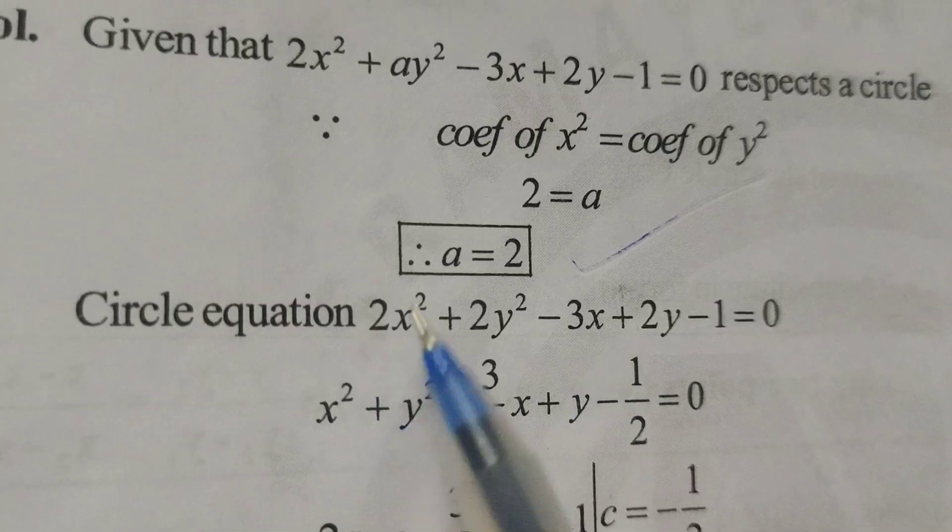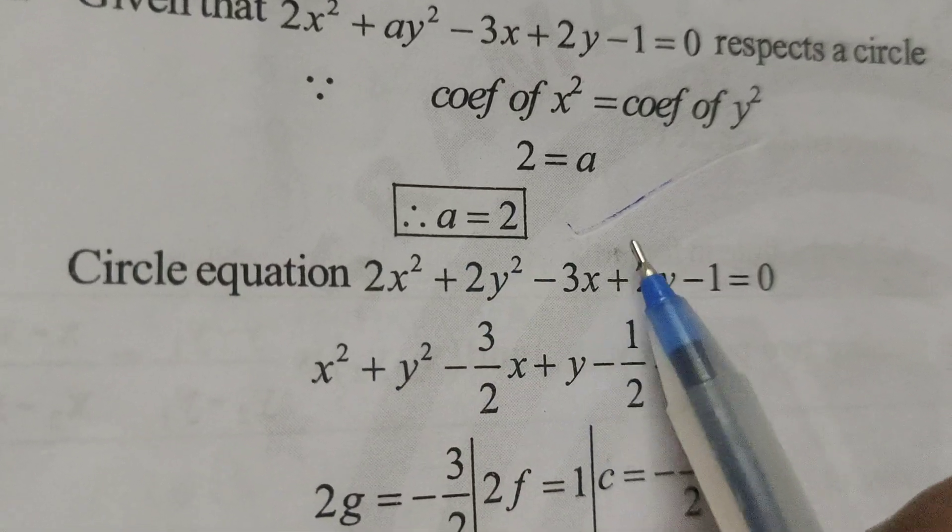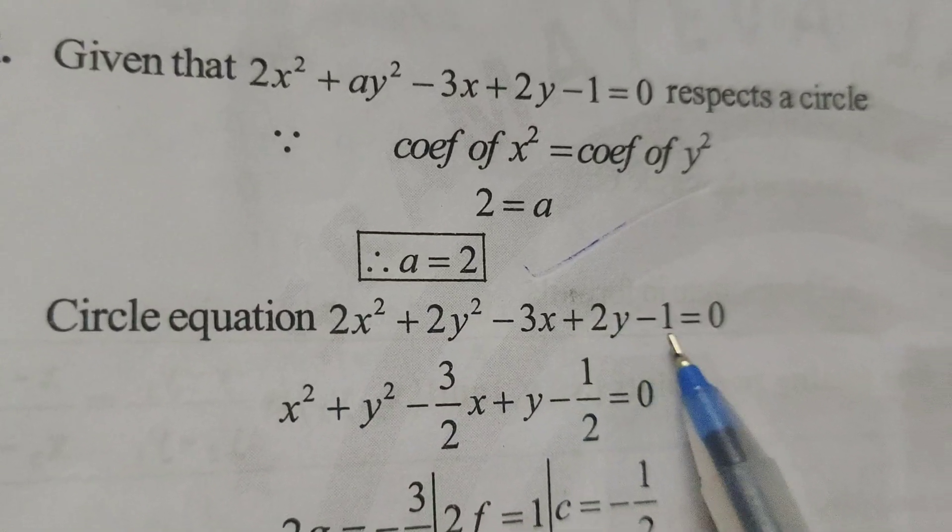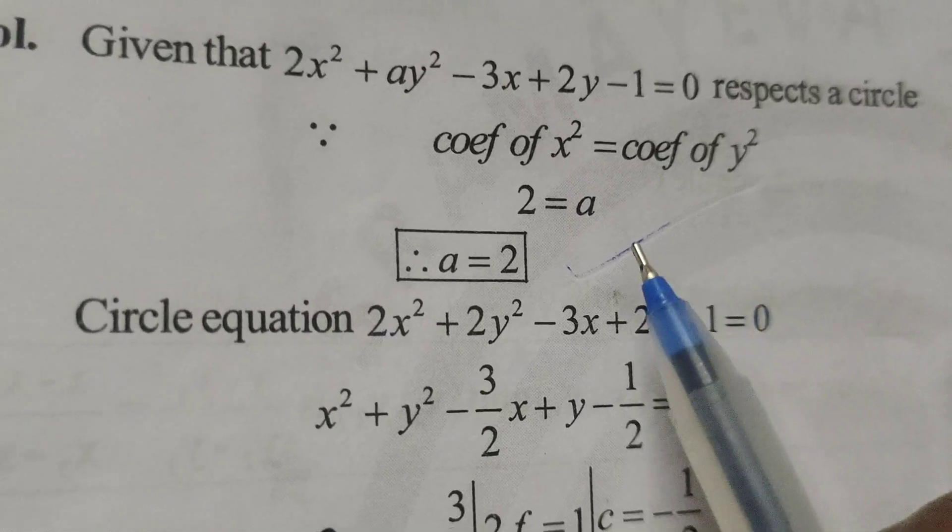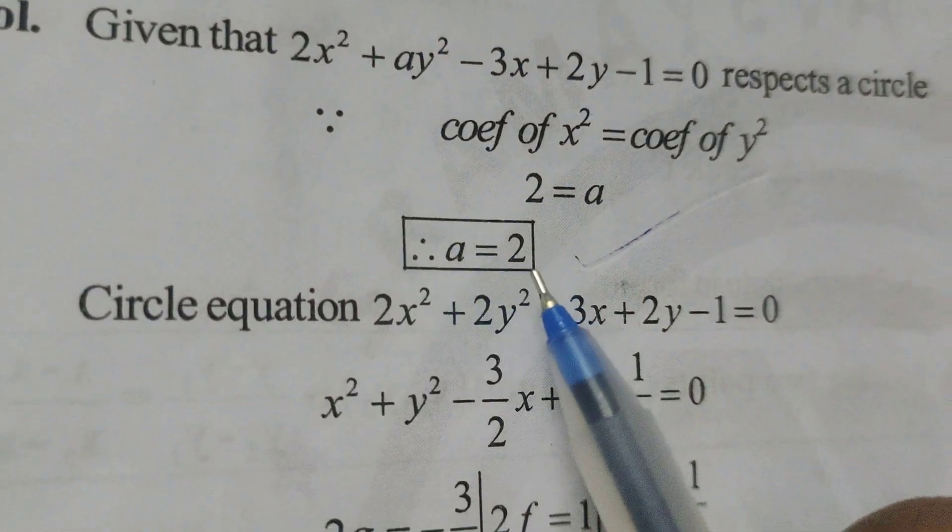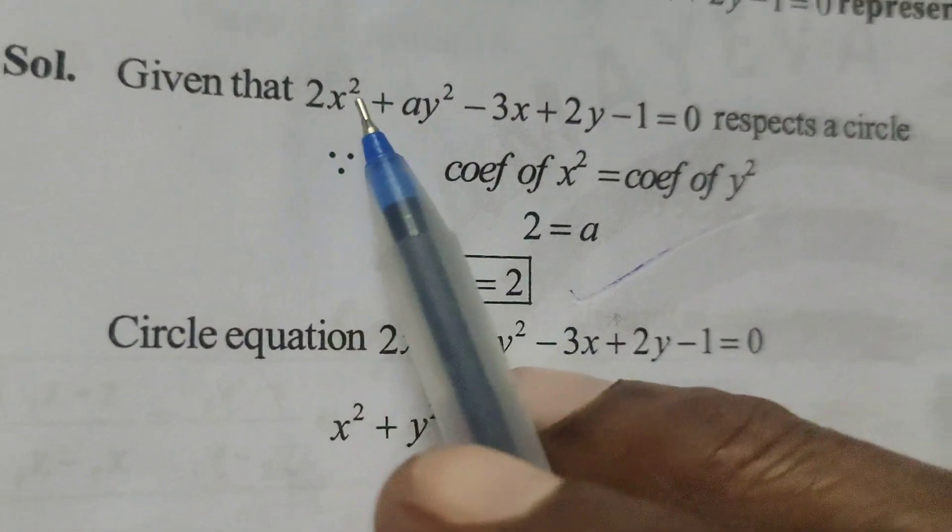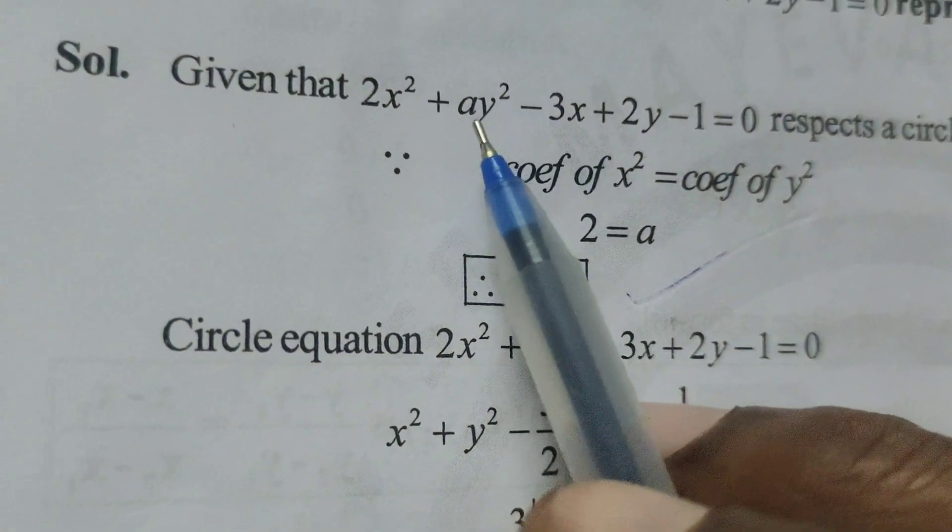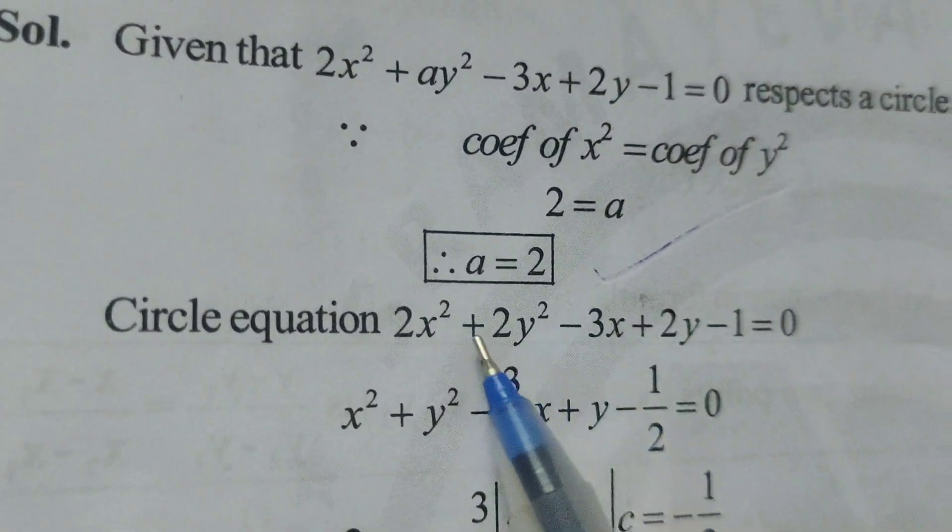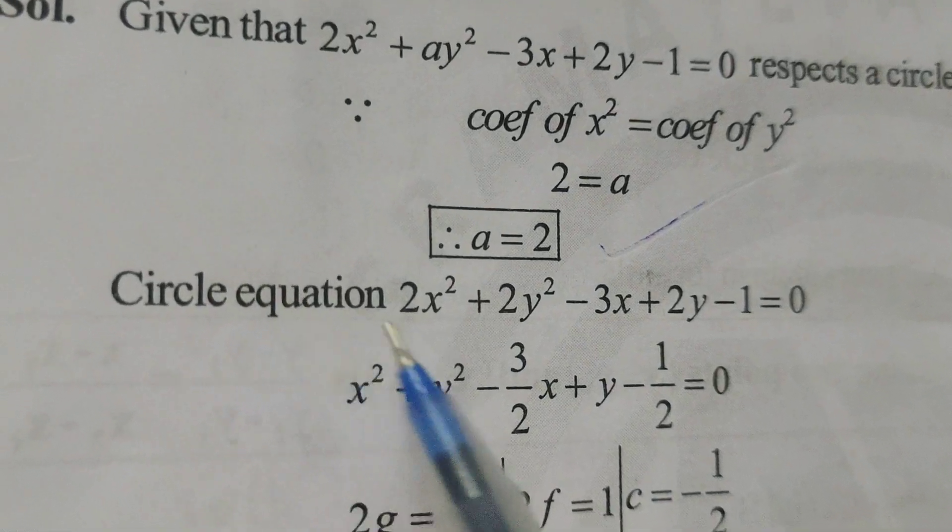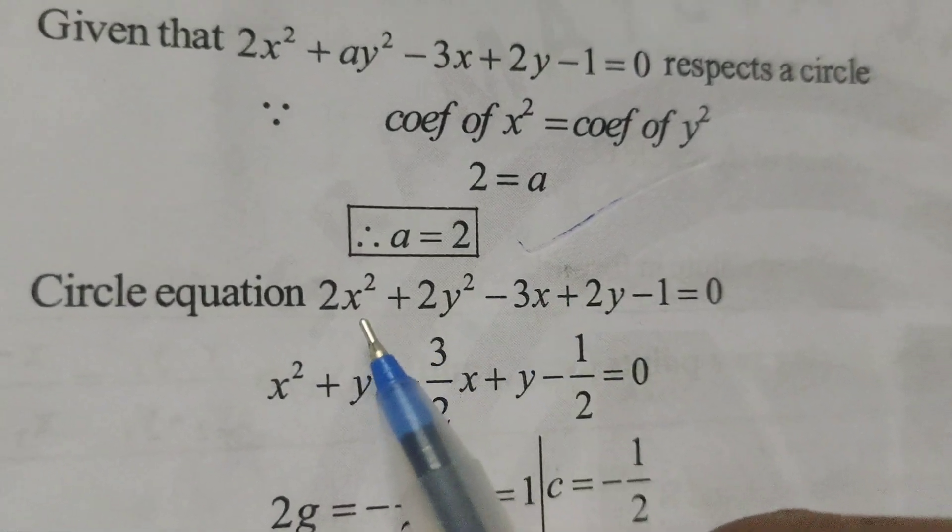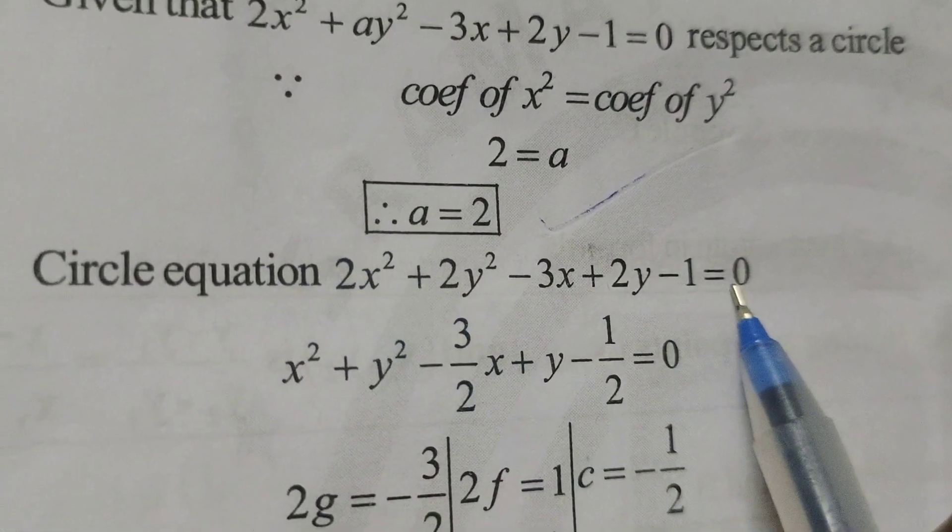Circle equation, 2x square plus 2y square minus 3x plus 2y minus 1 equals to 0. Here, find out A value 2, substitute in the given circle equation in place of A, we will get the, again, replacing circle equation.